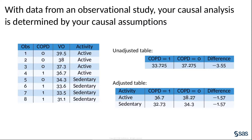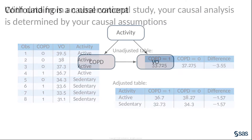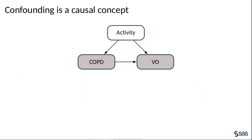To answer this question, you need to clearly articulate and examine the causal assumptions that inform your analysis. A Directed Acyclic Graph, or DAG, is a simple yet powerful tool that you can use to reason about your causal assumptions.